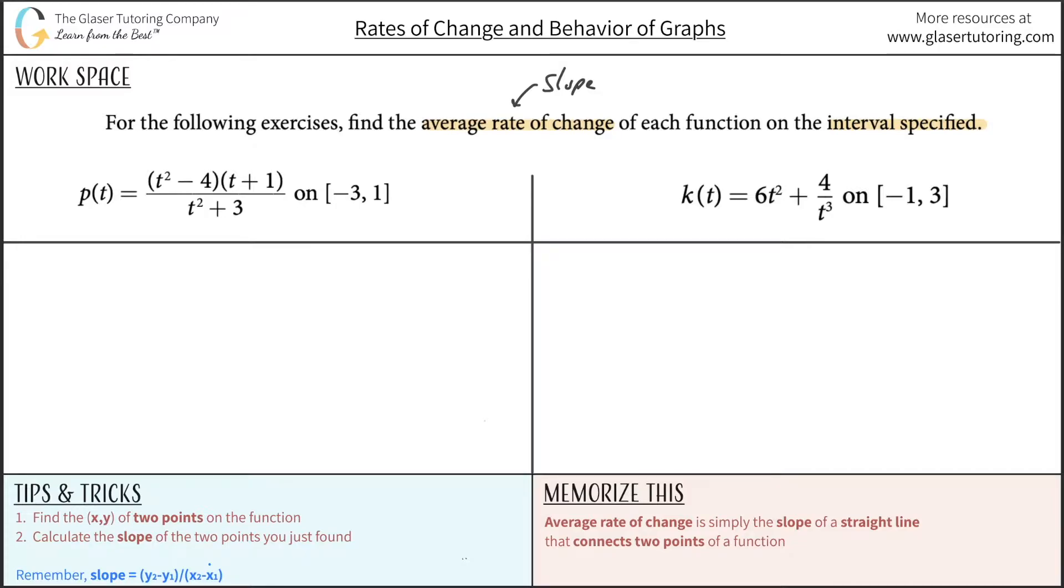Now knowing that's the case, if I want to find the average rate of change and we know it's the slope between any two points of a function, I'm going to write down my slope formula then, that it's going to be y2 minus y1 over x2 minus x1. And now in order for me to calculate the slope, I need to know these four variables. Well, do I know them? Did they give them to me from this information?